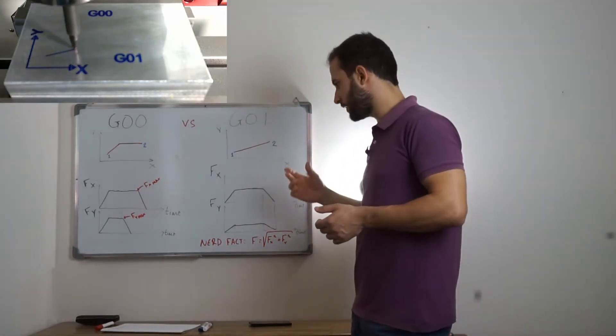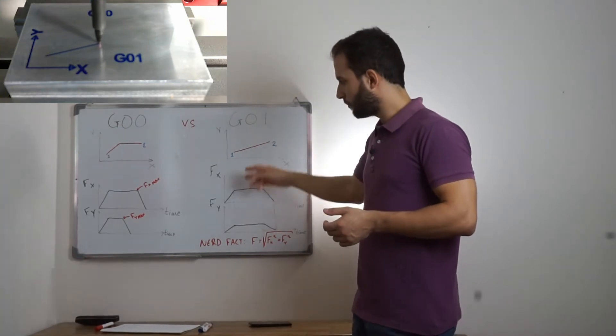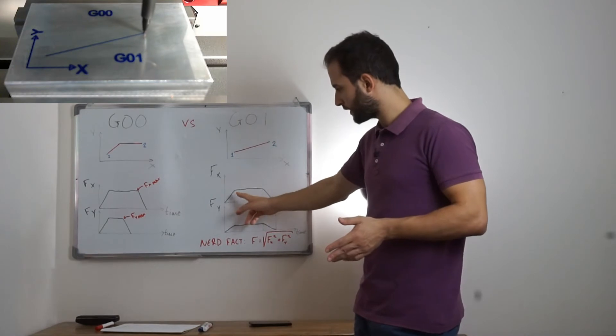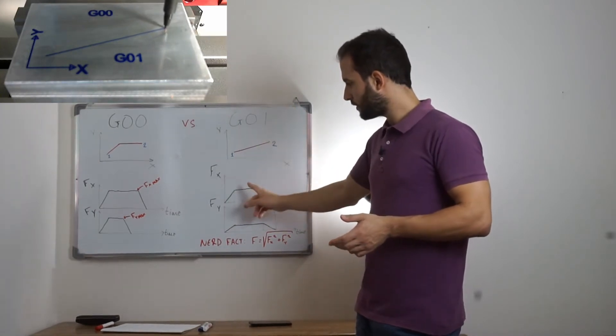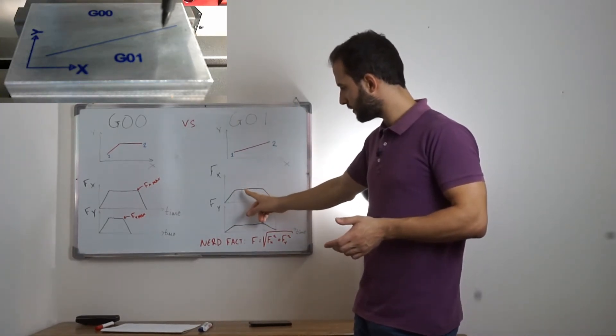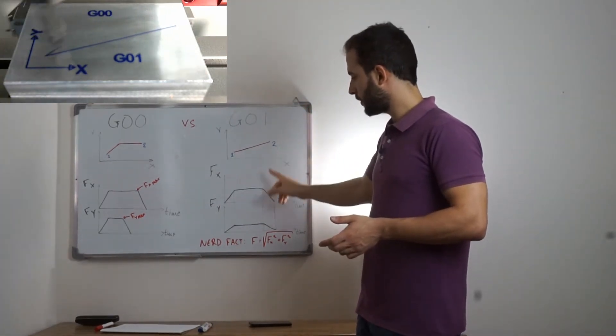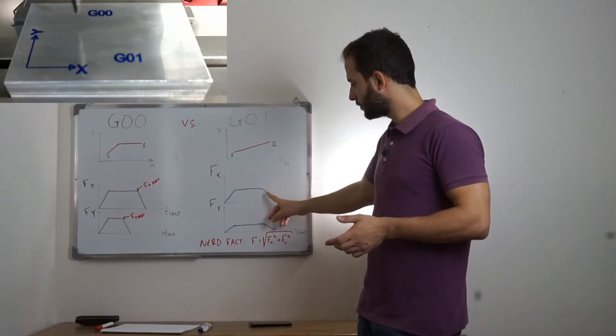This is why, when we program G1, we actually control both axes to start accelerating at the same time, to get their final speed at the same time, and go on as long as this movement goes.